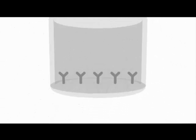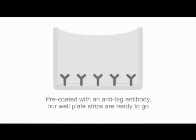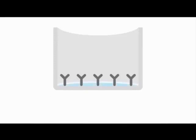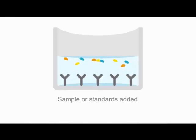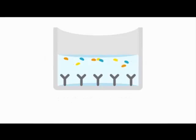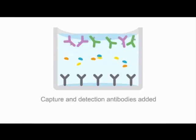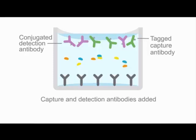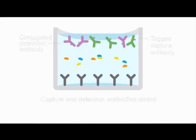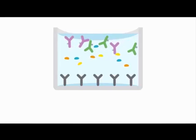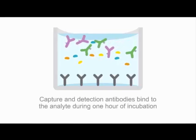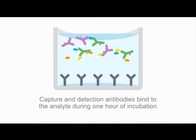The Simple Step ELISA begins with removing the number of microtiter strips needed to set up your assay. As previously mentioned, every well in a Simple Step ELISA is pre-coated with a highly specific anti-tag monoclonal antibody. To begin, add 50 microliters of the protein standard or unknown sample to each well. Next, add 50 microliters of the antibody cocktail containing the capture antibody and detector antibody to each well. Incubate the Simple Step ELISA for one hour at room temperature with shaking to ensure thorough mixing of antibodies and analyte.